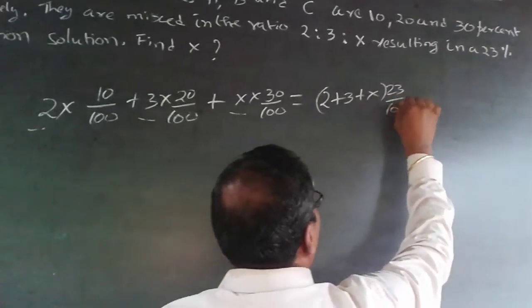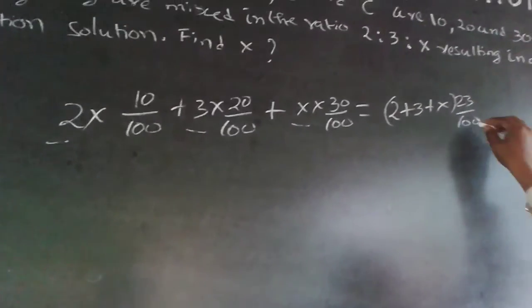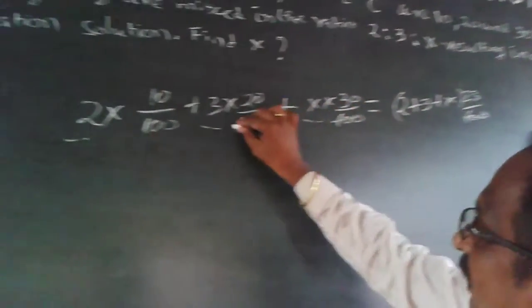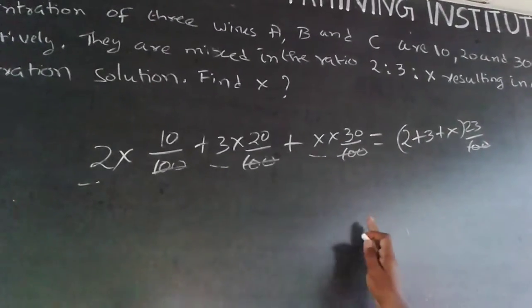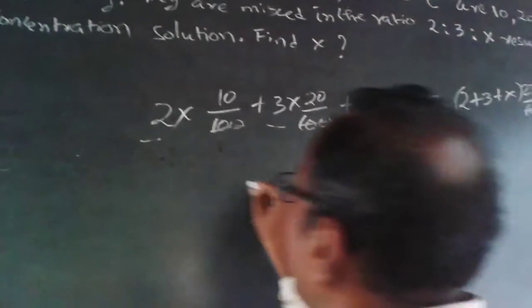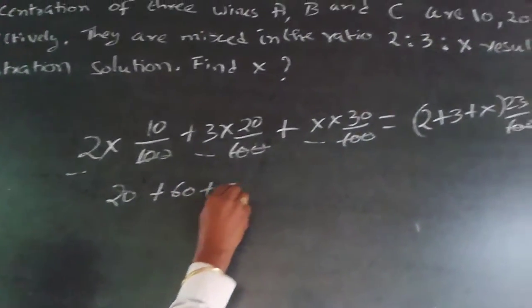Now solving this, 100 will get cancelled out in all places because the denominator is 100. Then work it out, simplify it. 20 plus 3×20 will be 60 plus 30x.